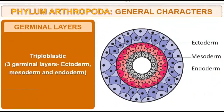There are three germinal layers. That means the arthropods are triploblastic in nature. There are three germ layers: ectoderm, mesoderm, and endoderm. These are the triploblastic layers that are present in the phylum Arthropoda.